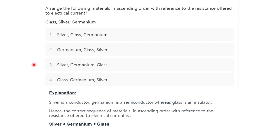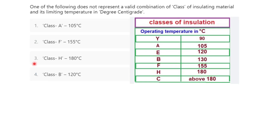Next question: which of the following does not represent a valid combination of class of insulating materials and its limiting temperature? Class A at 105°C is correct. Class F at 155°C is also correct. Class H at 180°C is also correct. Class B is given as 120°C, but class B is actually 130°C — so option 4 is incorrect, making option 4 the correct answer.